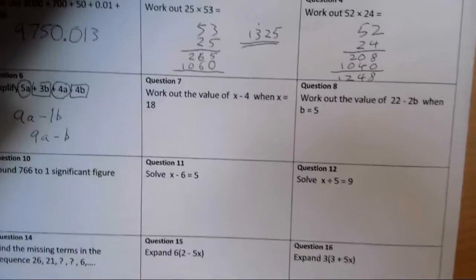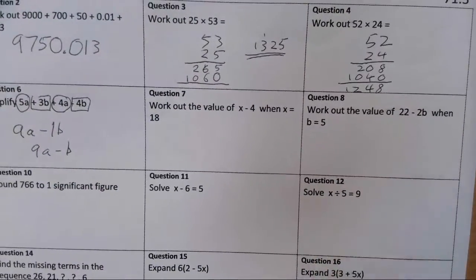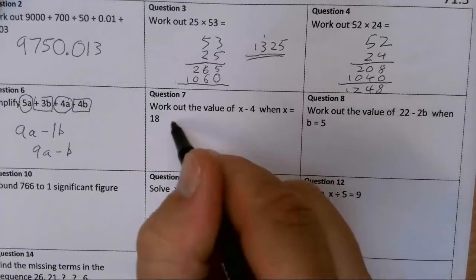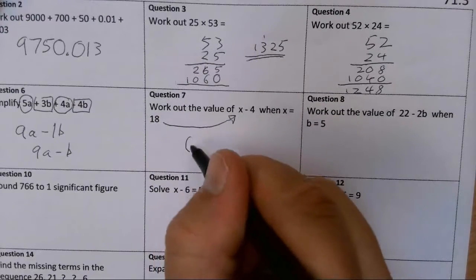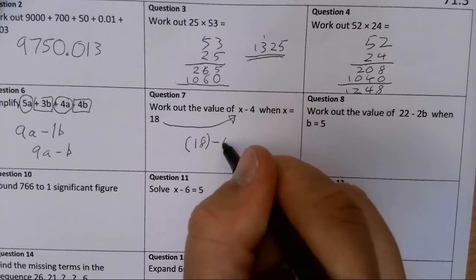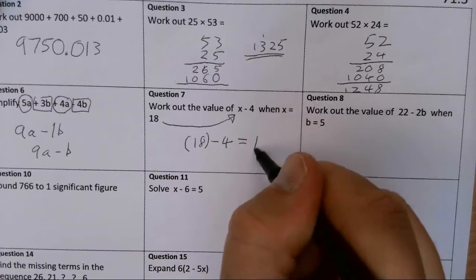Right, substitution, the work from a couple of weeks ago. When X equals 18, I take the 18 and I substitute it in for the X. So I get 18 take away 4, which is going to give me 14.